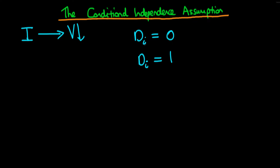then in that situation we know that the simple difference of means, delta mu, actually evaluates to the average causal effect.